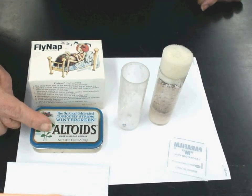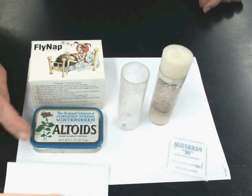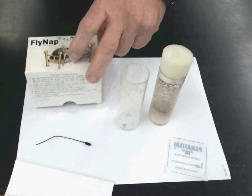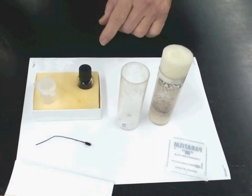Inside the Altoid box here, you're going to find these fly wands. They look like this. And inside the fly nap box, you're going to find the fly nap and another container. This is the fly nap.